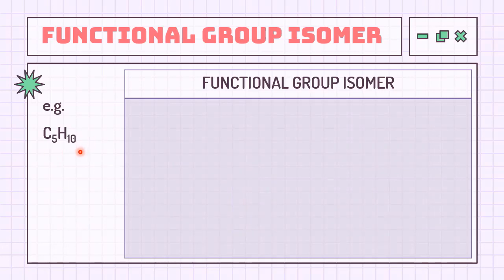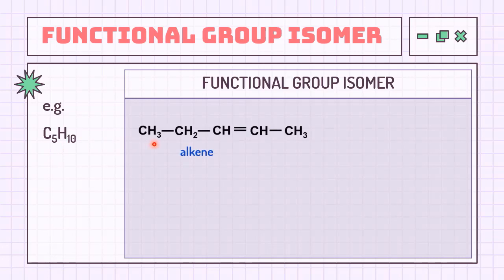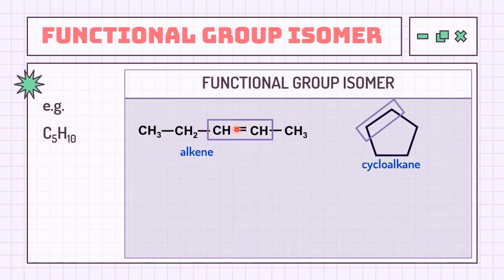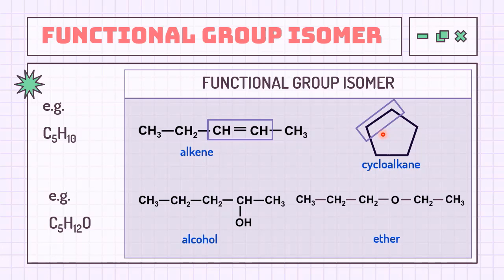For C5H10, the double number of hydrogens from carbon and no heteroatom present means this belongs to alkene. The alkene's functional group isomer is cycloalkane — one with an open chain structure and one double bond, while the other has a ring structure with no double bond. Finally, for alcohol and ether, simply change the hydroxyl group to become an alkoxyl group with the same number of carbons and hydrogens.